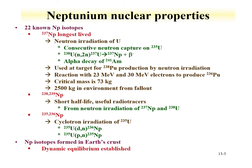Neptunium has 22 known isotopes. The longest lived is the neptunium-237 isotope, which can be produced two ways in the nuclear fuel cycle. One is consecutive neutron capture on uranium-235. Uranium-235 captures a neutron and instead of fissioning, in a smaller percentage of the time it will capture to form uranium-236. The uranium-236 is also long-lived and it can capture a neutron and create uranium-237, which then beta decays to neptunium-237.